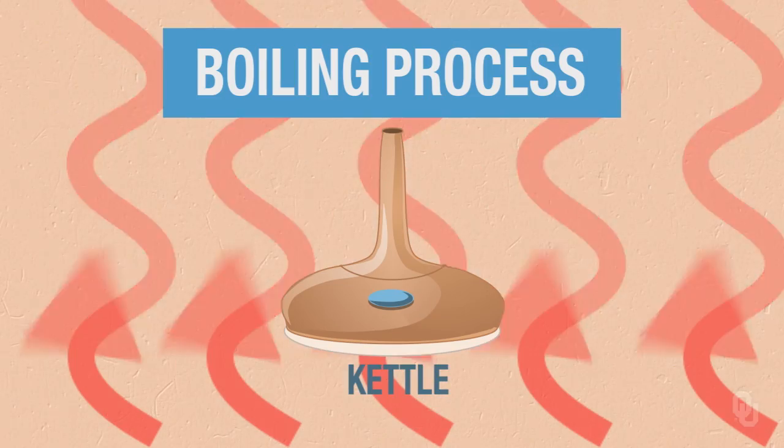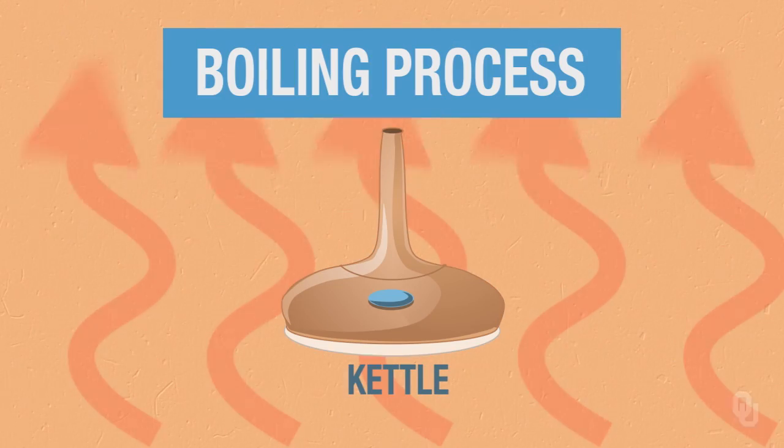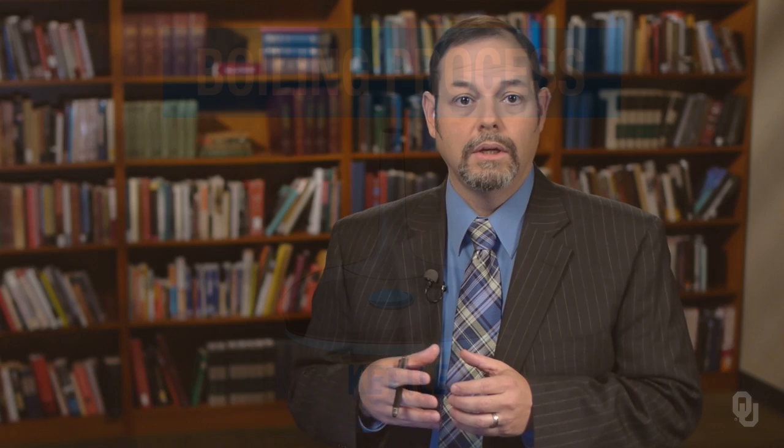Now how does this occur? In the hopping process, this occurs with a long boil — a 60-minute boil, let's say — and the alpha acids that are extracted are isomerized to the iso-alpha acids. It takes heat and it takes time, and not all alpha acids are converted to iso-alpha acids. But those that are converted, it turns out, are more soluble and add a little bit more bitter flavor to the beer.